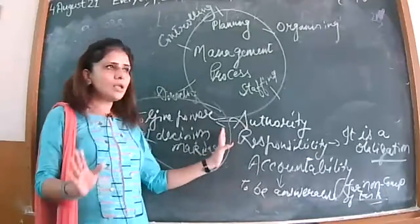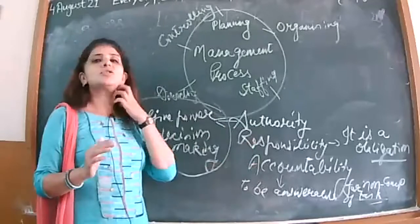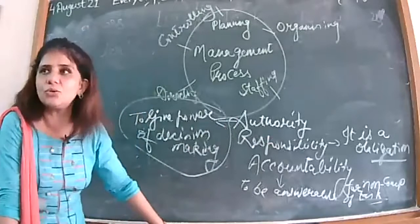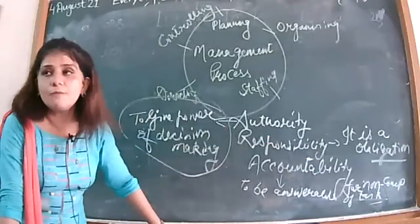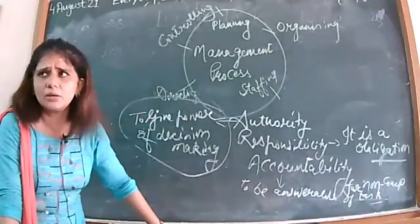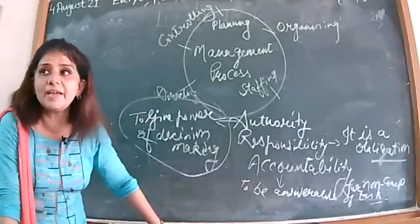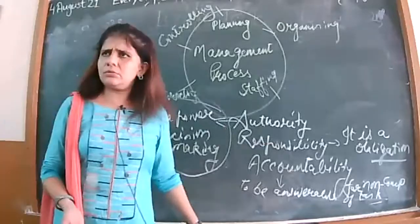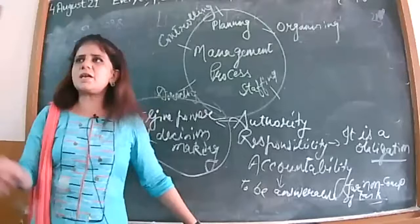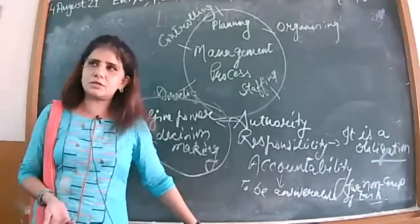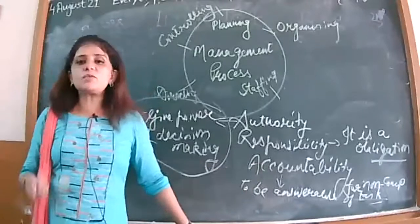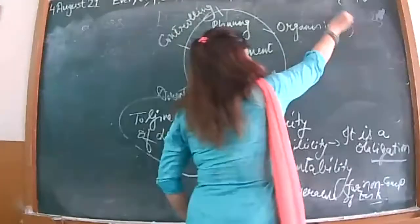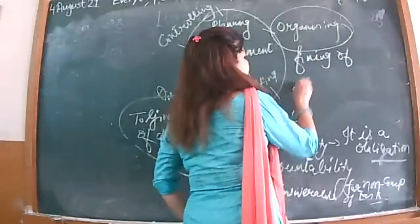All three points are clear, but each point is different. However, the three — authority, responsibility, and accountability — must be given to one person. If you give authority without responsibility, the person will misuse the authority — it is human nature to enjoy authority when not made responsible. So authority, responsibility, and accountability go together. The overall chapter on organizing deals with fixing superior-subordinate relationships.